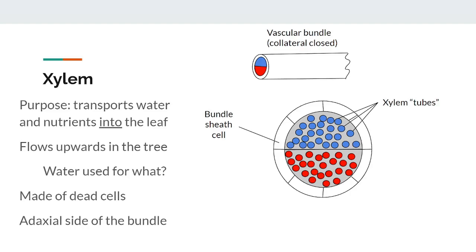The primary purpose of xylem is to transport water into the leaf, but it also transports nutrients that are dissolved in the water. If you think about where this water is coming from — the roots — it makes sense that the water only ever flows upwards, since all of it is coming from the very bottom of the tree. This water is then used for photosynthesis and transpiration. At maturity, xylem cells are actually dead, but being dead does not prevent them from carrying out their purpose. In a vascular bundle inside a leaf, the xylem will typically be on the adaxial or upper side.